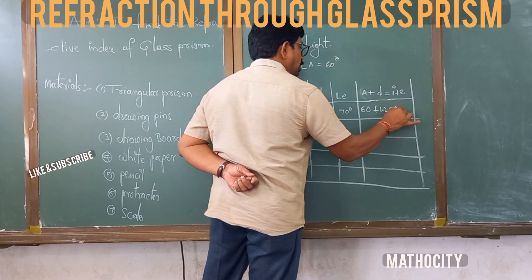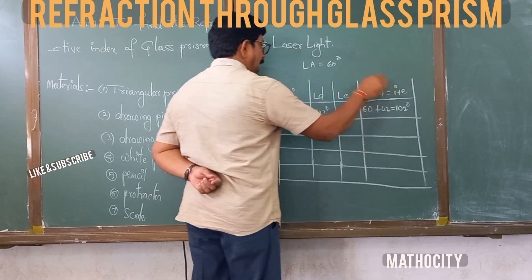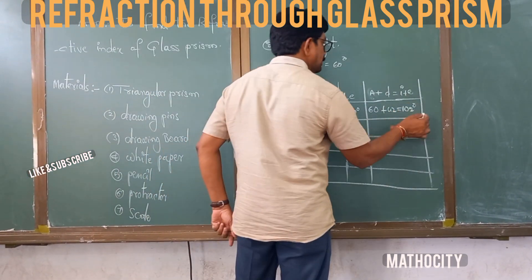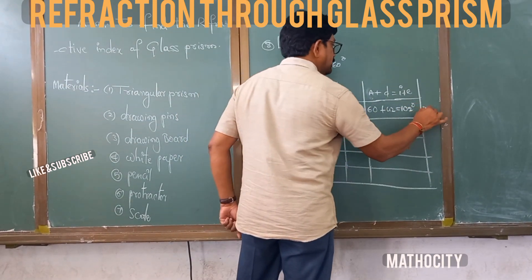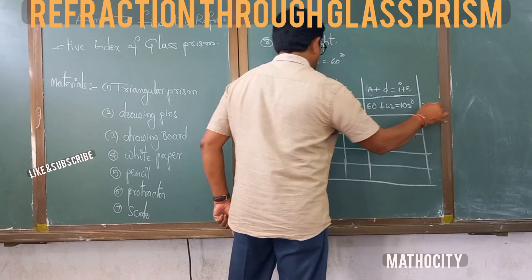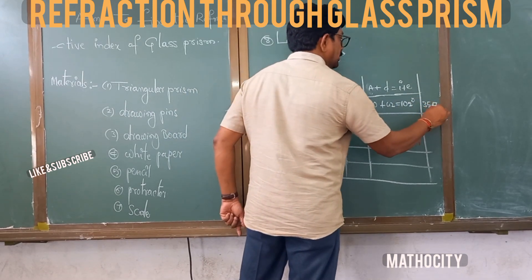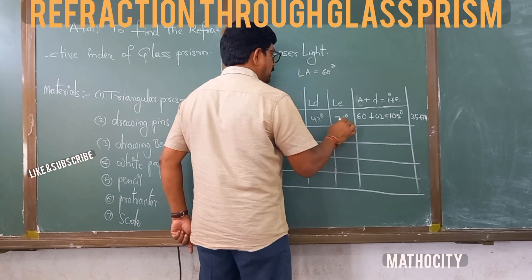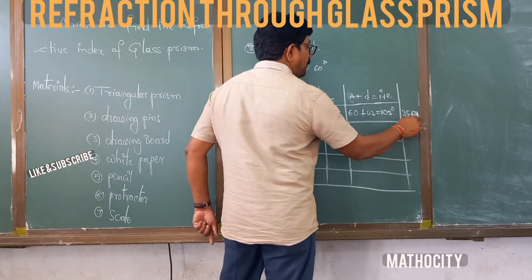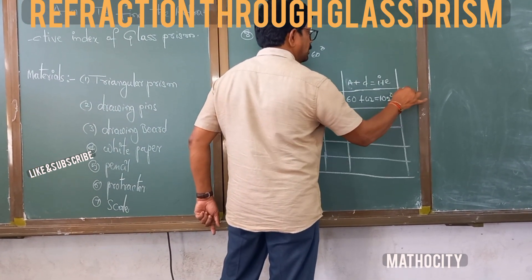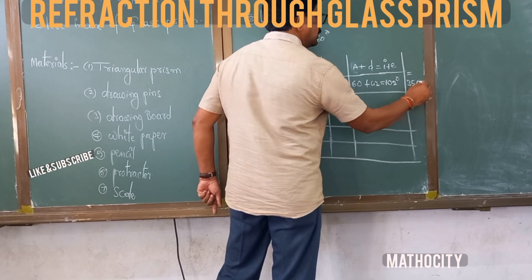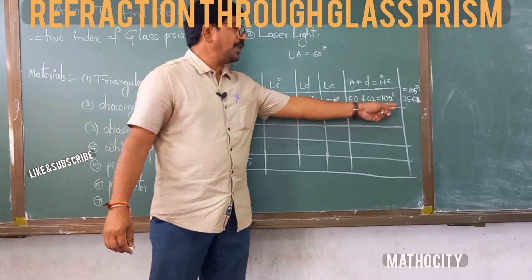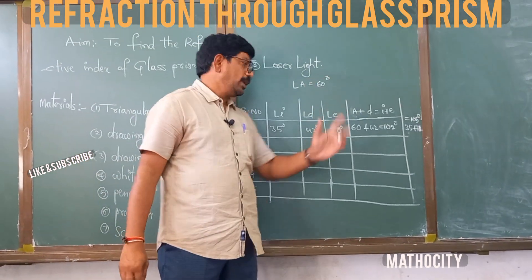For the first reading: A plus D = 60 plus 42 = 102 degrees. And I plus E = 35 plus 71 = 106 degrees — so there is a difference of about 3 degrees, which is noted. There is a small discrepancy due to experimental error.